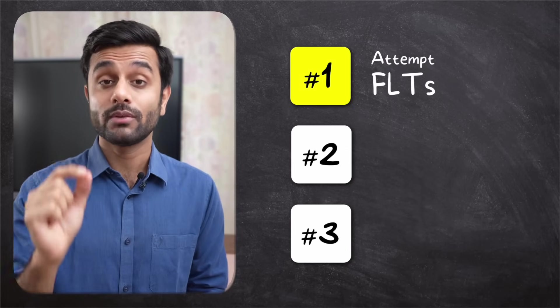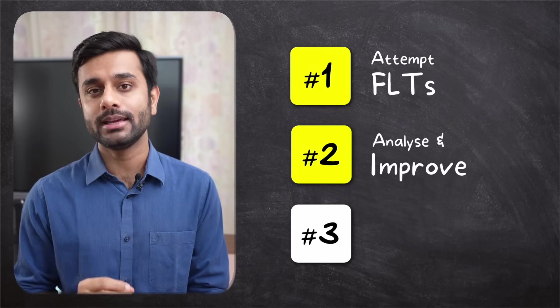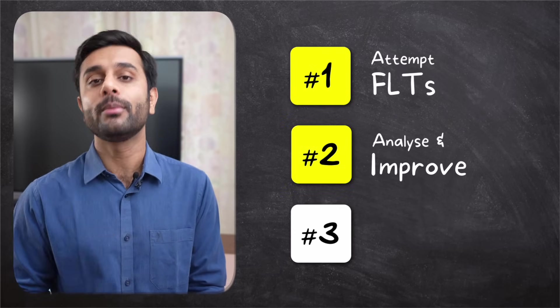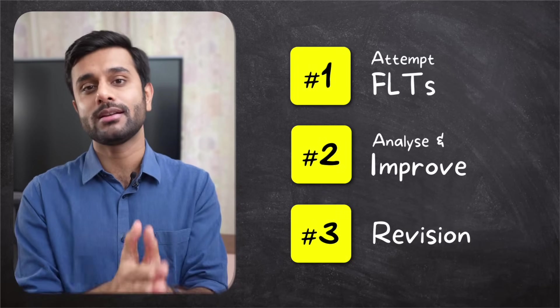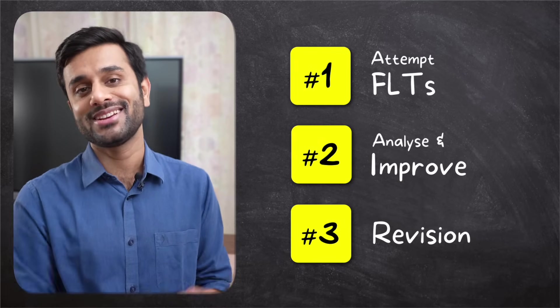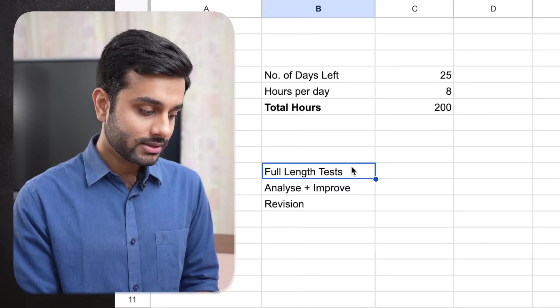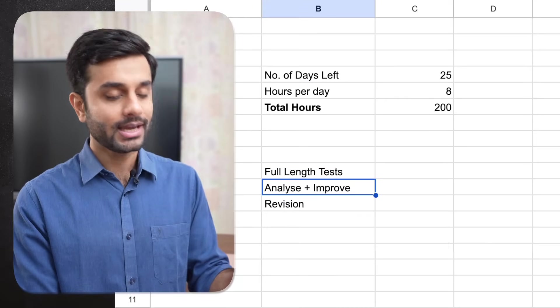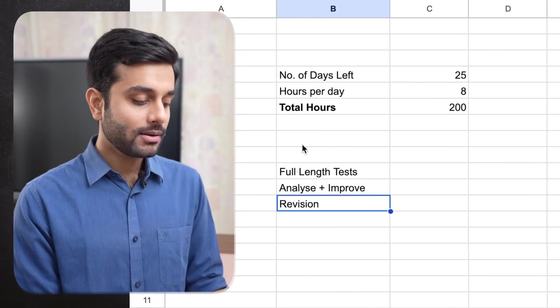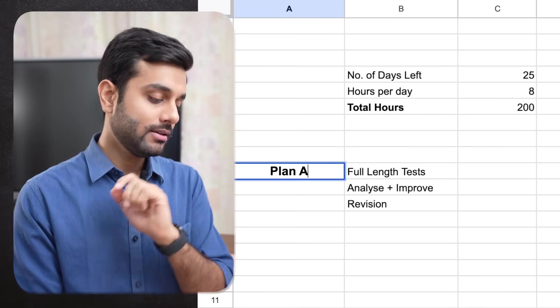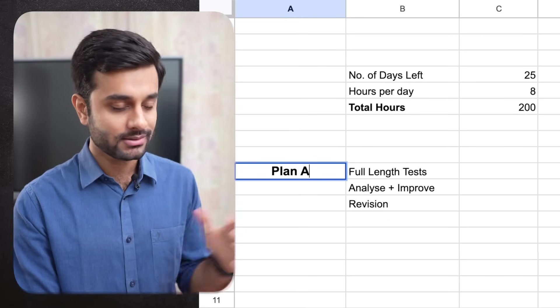In last days, last month, you have to focus on what is going to work best for you. So there are 3 areas where you have to focus which are essential and in fact sufficient to focus for last month. Number 1 is you have to attempt full length tests, FLTs. Number 2 is analysis of those FLTs and improvement in your performance in FLTs in those 3 hours. And number 3 is revision. So I have written these 3 points: FLT, analysis plus improvement and revision in this plan. And let us call this plan as plan A.